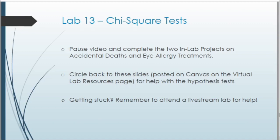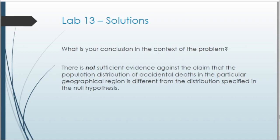Let's take a look at a couple of solutions. For the first ILP on accidental deaths, after finding the p-value we should come to the decision to fail to reject the null hypothesis. A sample conclusion: there is not sufficient evidence against the claim that the population distribution of accidental deaths in the particular geographical region is different from the distribution specified in the null hypothesis. Since this is a goodness of fit test, we're checking if our sample distribution is similar to the null distribution.